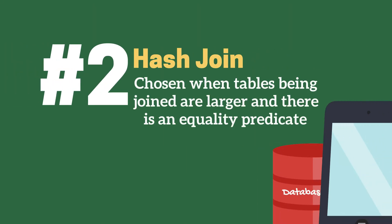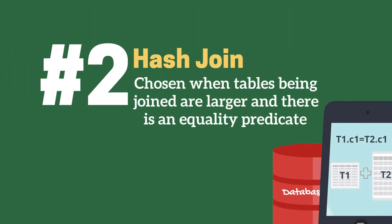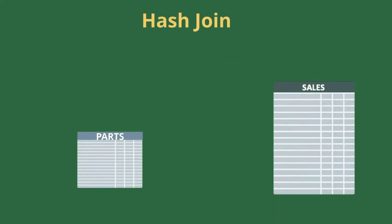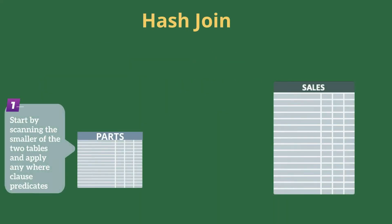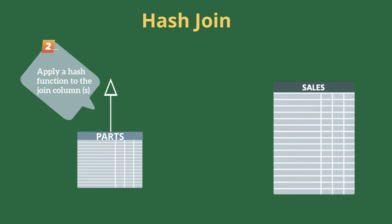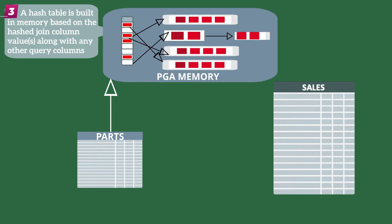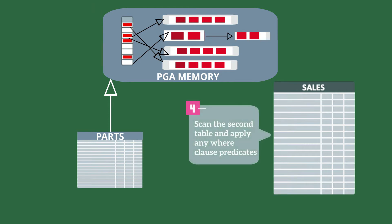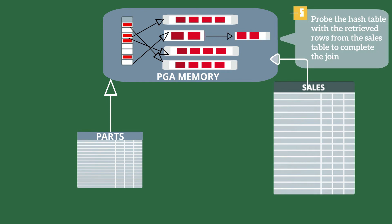A hash join is done when the objects are larger and we have an equality predicate. What happens is we scan the smaller of the two tables first, apply any WHERE clause predicates, then apply a hash function to the join column of the resulting rows and build a hash table in memory. We then scan the larger of the two tables, apply any WHERE clause predicates, and apply the same hashing function to the join column of the second table, then do a lookup in the hash table to see whether or not we have a match.